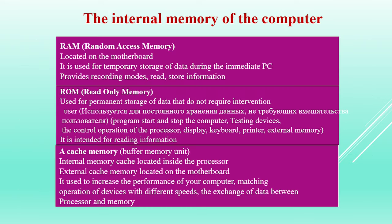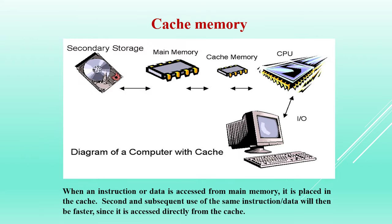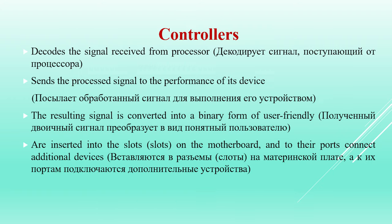Cache sits between secondary storage, main memory, and the processor. You can see a diagram of the computer with cache on the screen. Controllers send signals to the processor for performance of its device. The resulting signal is converted into binary form, and controllers are inserted into slots on the motherboard and ports to connect additional devices.